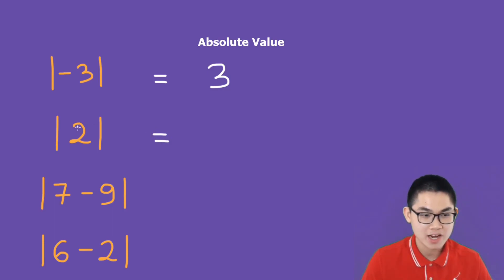What is the absolute value of 2? That's positive 2. What is the absolute value of 7 minus 9? 7 minus 9 gives you negative 2, and you turn this into positive 2.